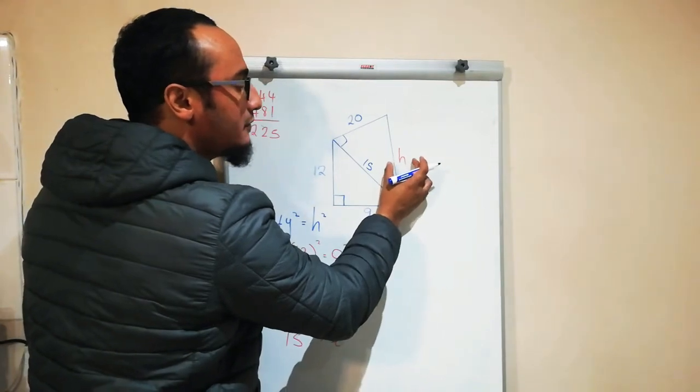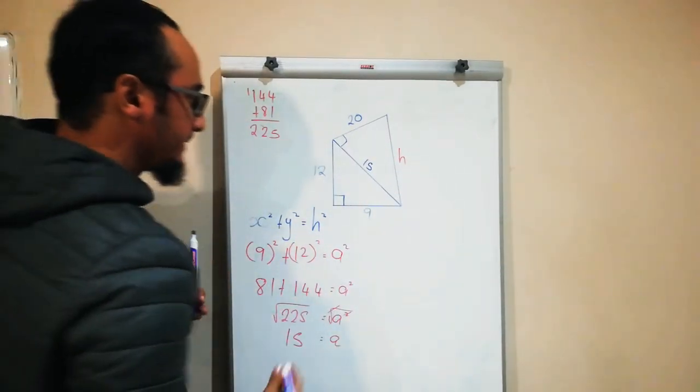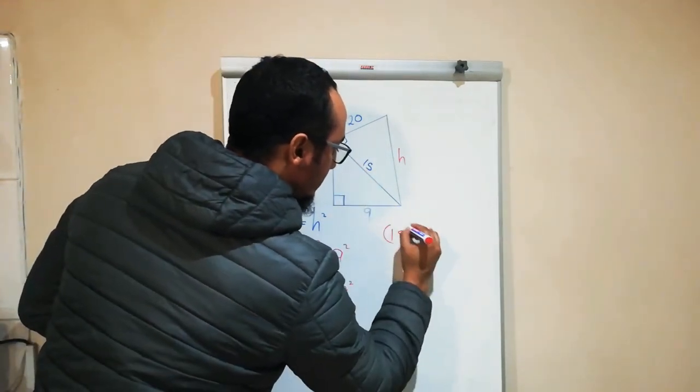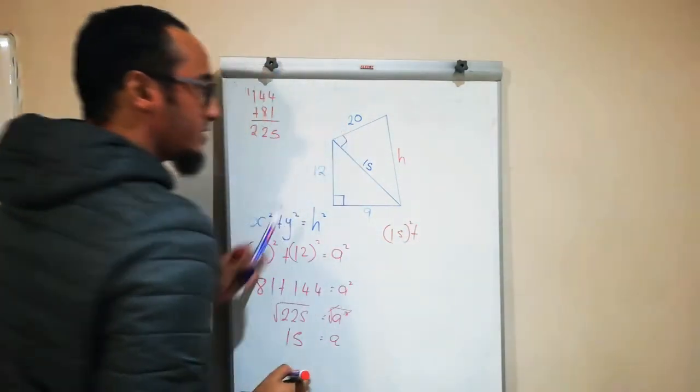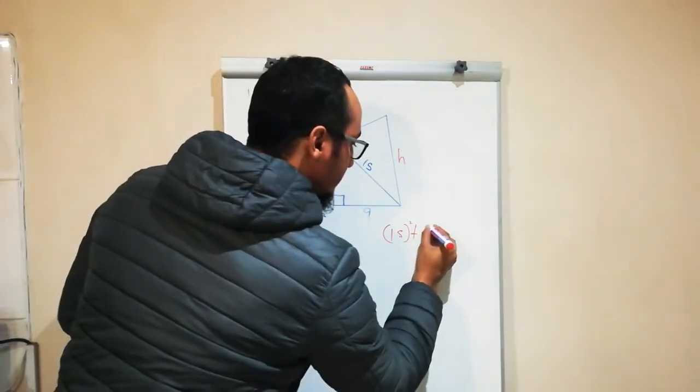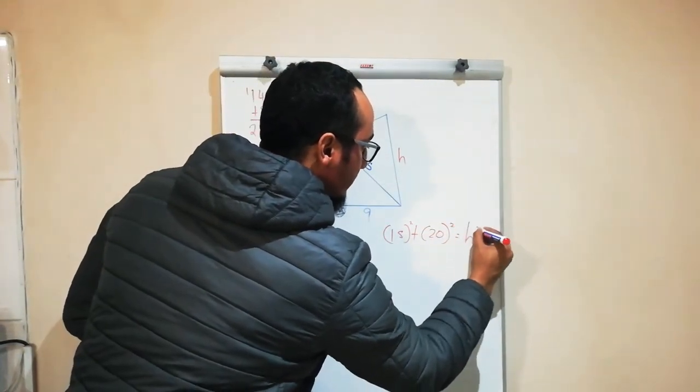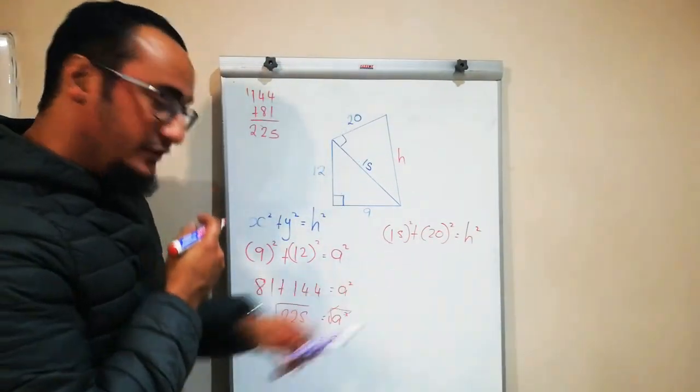Okay, what's the value of x over there? It is 15 squared. What's the value of y? 20 squared. And that equals h squared.